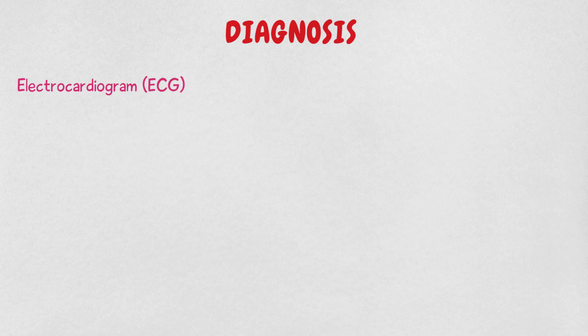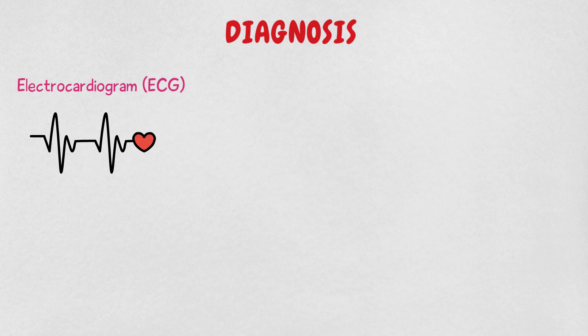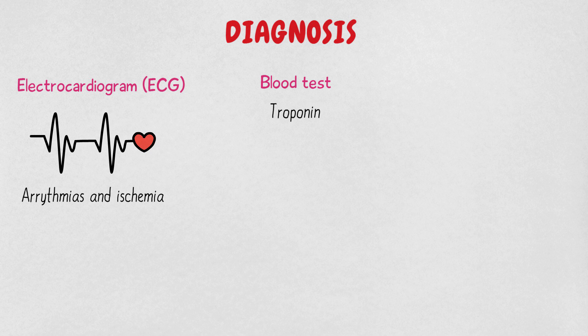Electrocardiogram, commonly called ECG — ECG records the electrical activity of the heart, which is used to diagnose heart abnormalities such as arrhythmias or to show ischemia. Blood tests can identify certain enzymes such as troponin that leak into the blood after your heart has suffered severe angina or a heart attack.